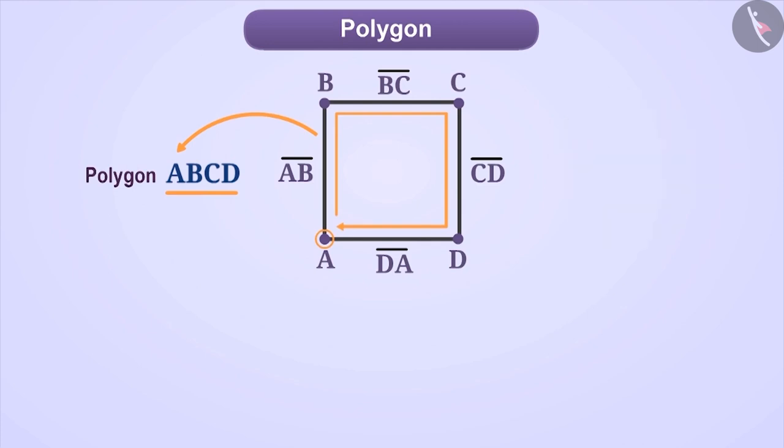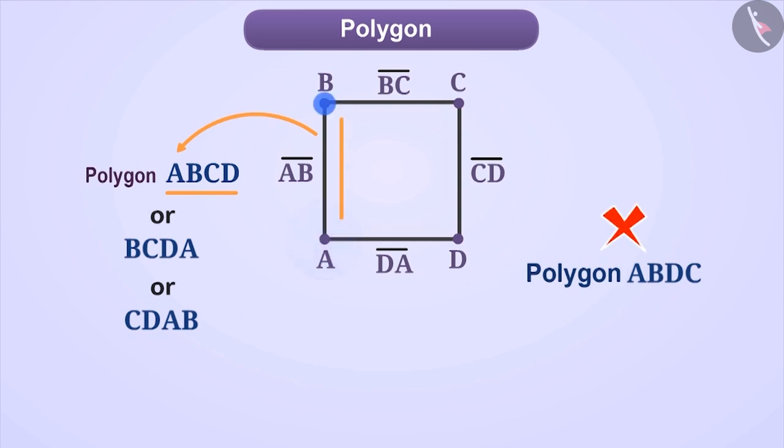Like this, we can name a polygon ABCD or polygon BCDA or polygon CDAB but we cannot name this polygon as ABDC because points A, B, D, C are not in sequence on the boundary of the polygon.